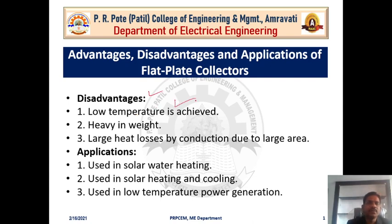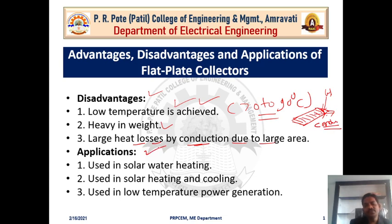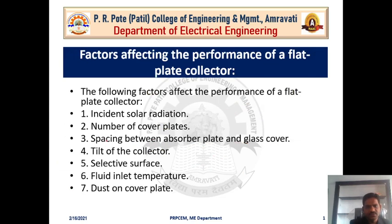Disadvantages: only a low temperature of 17 to 90 degrees Celsius is achieved. The collector is heavy in weight due to its large dimensions. There is also large heat loss by conduction due to the large area. Applications include: solar water heating, solar heating and cooling applications, and low-temperature power generation.